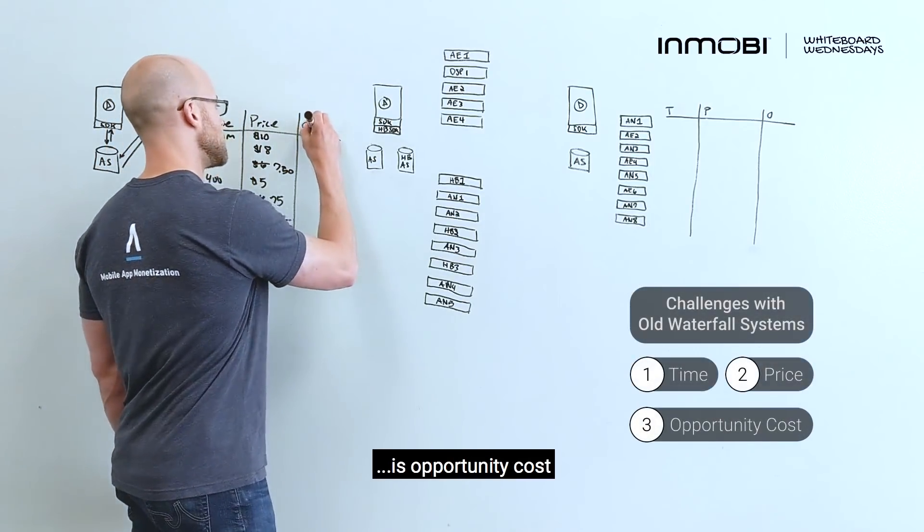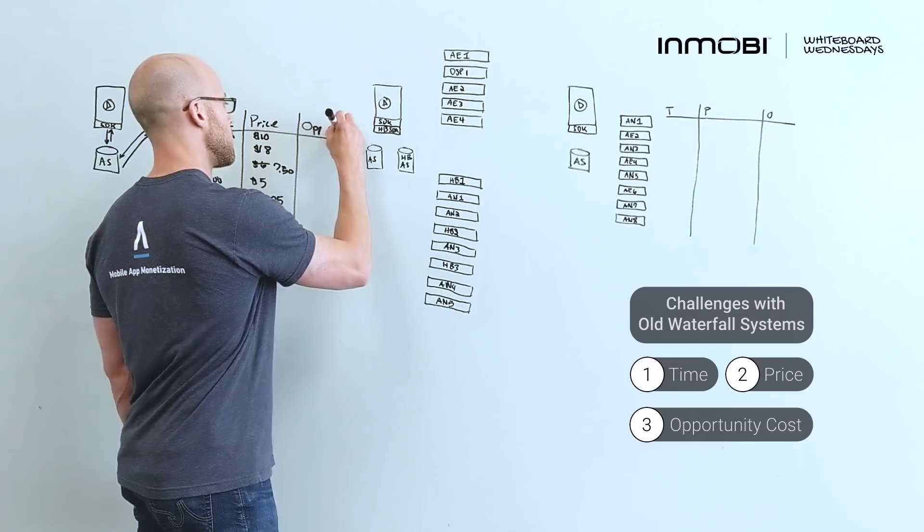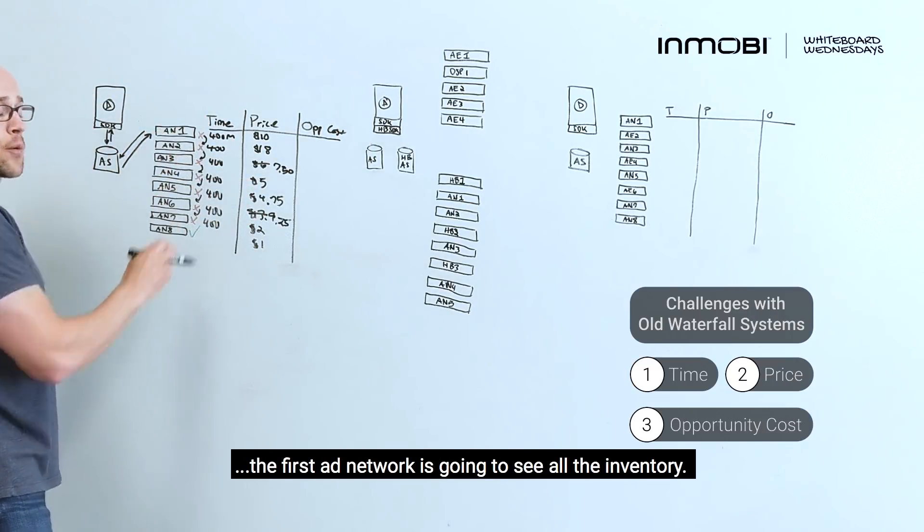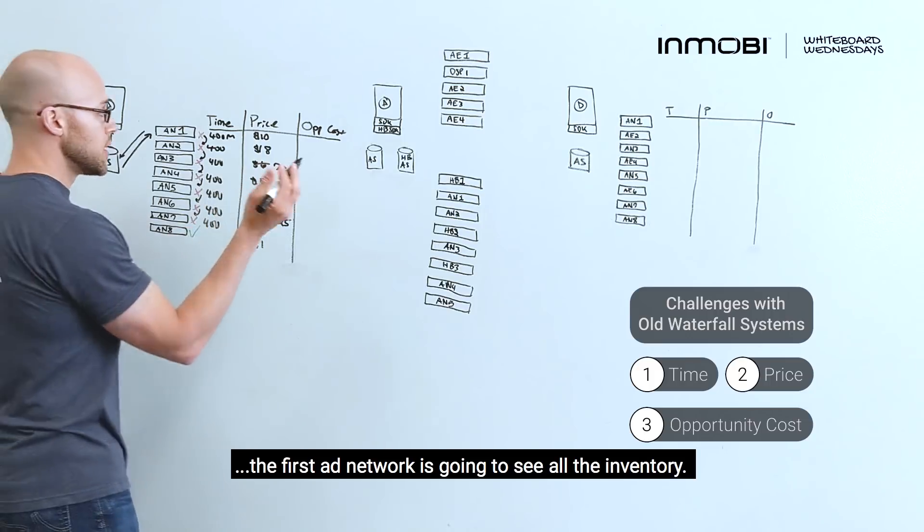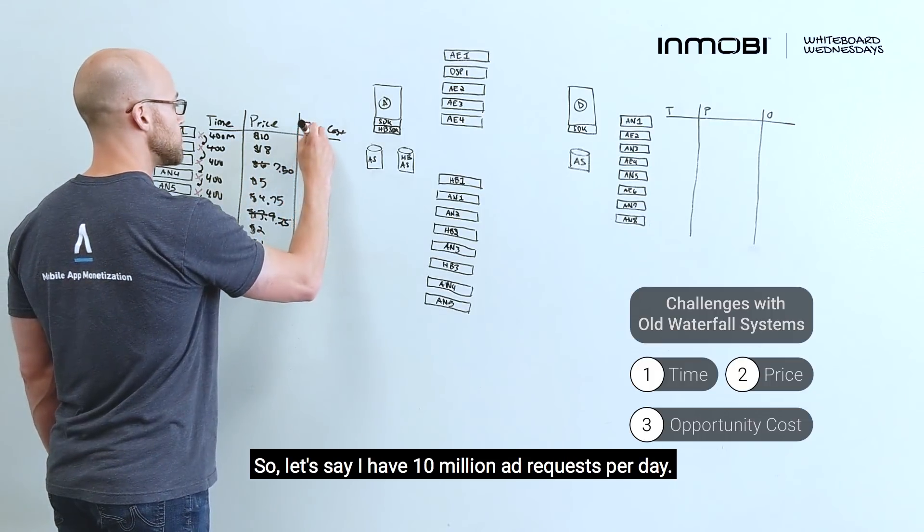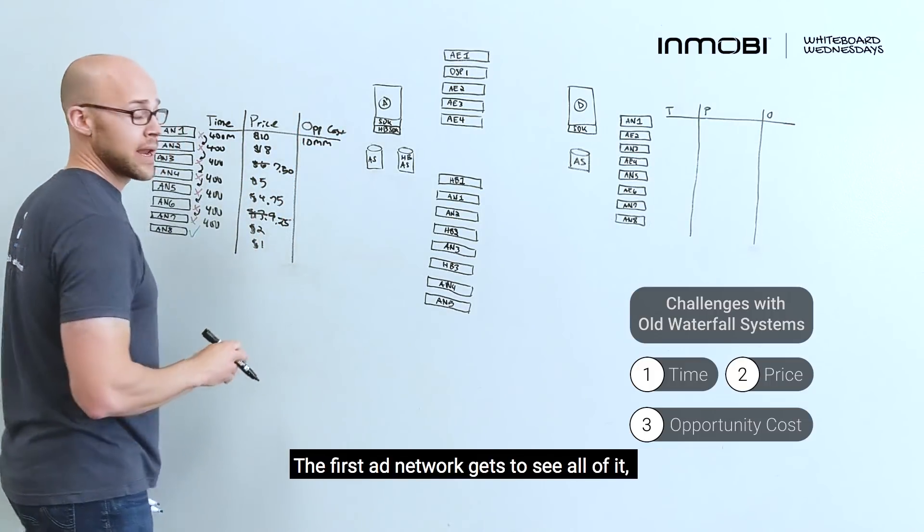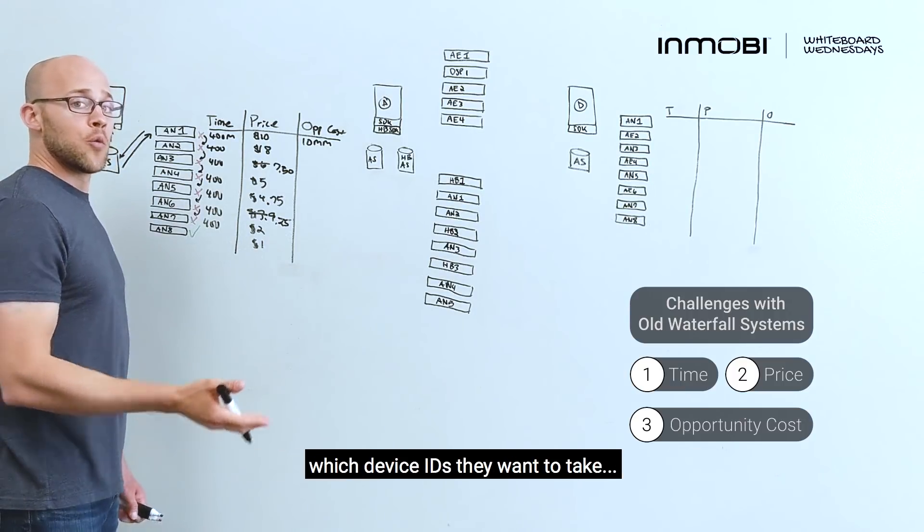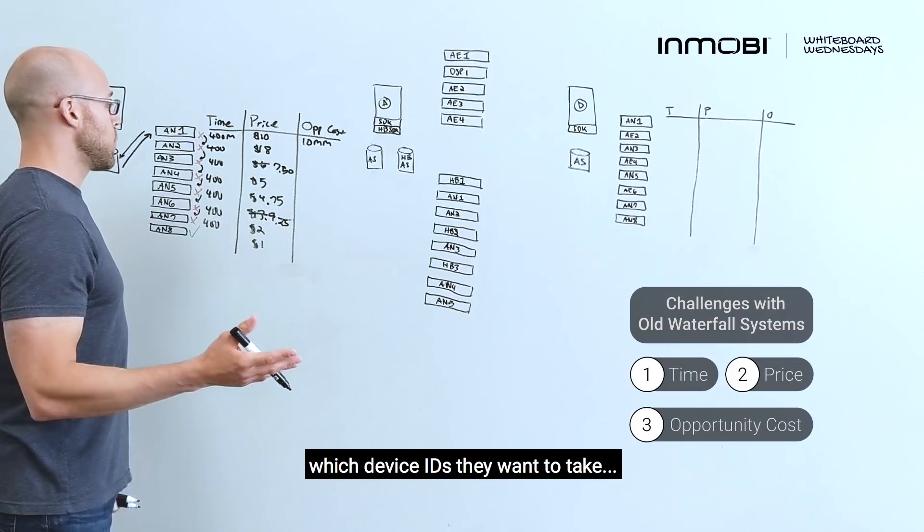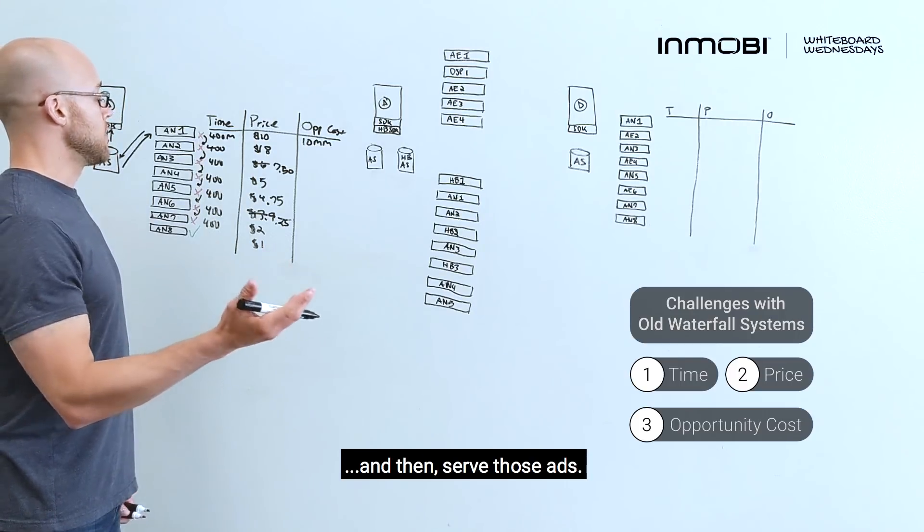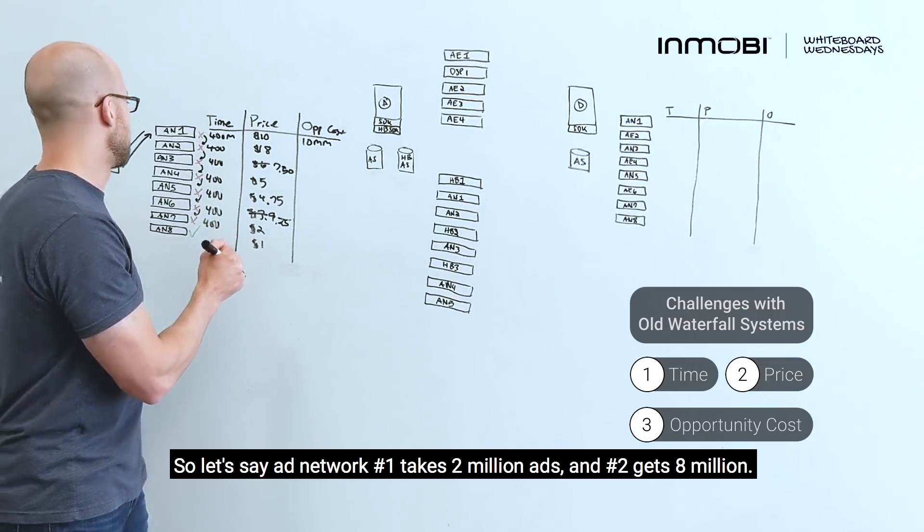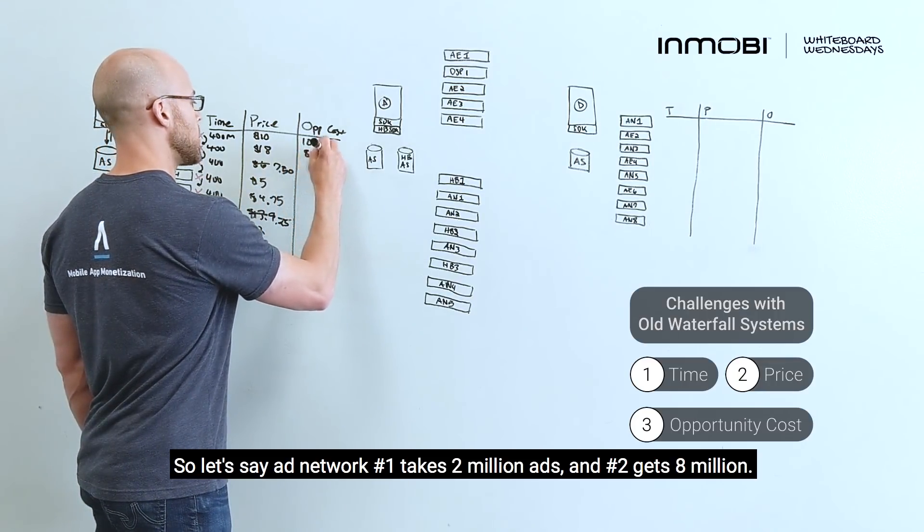The third challenge is opportunity cost. So because this is a waterfall system, the first ad network is going to see all of the inventory. So let's say I have 10 million ads per day. The first ad network gets to see all of it. They can determine which users they want to monetize, which device IDs they want to take, and then serve those ads. So let's say ad network number one takes two million ads, and number two gets eight million.